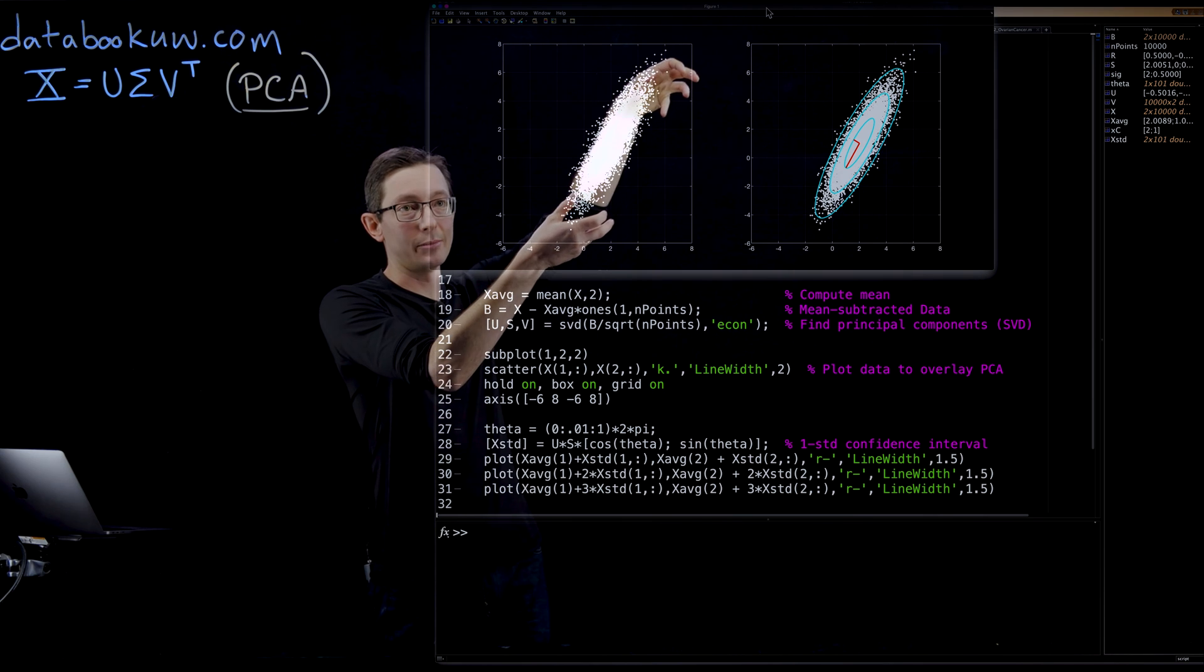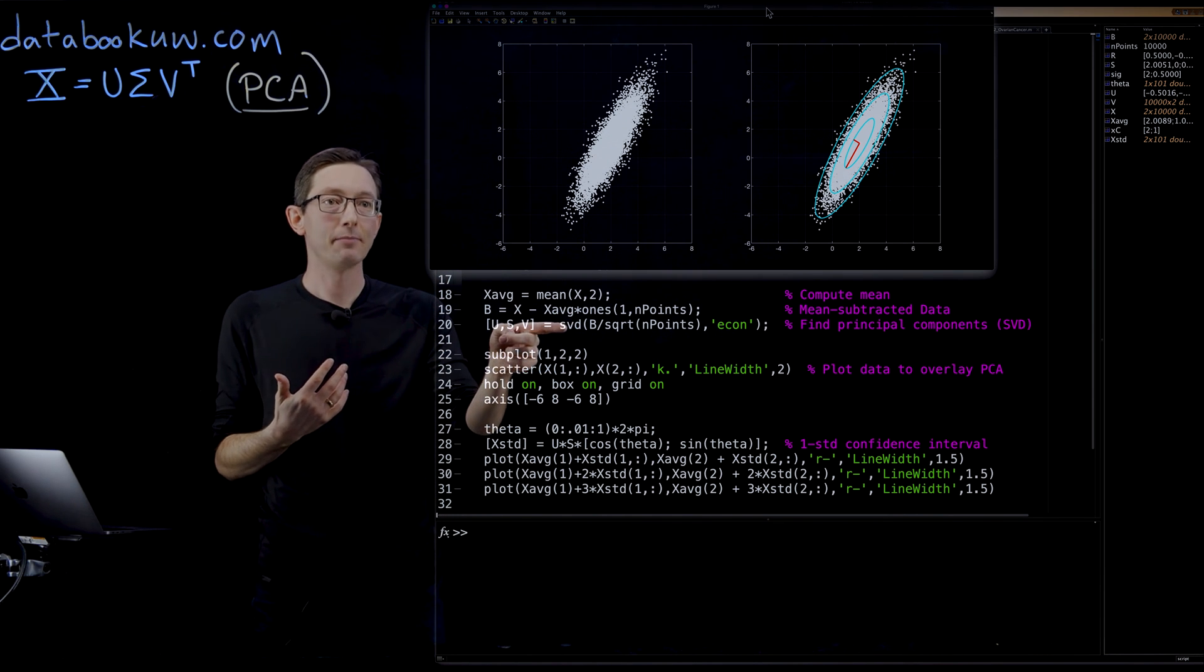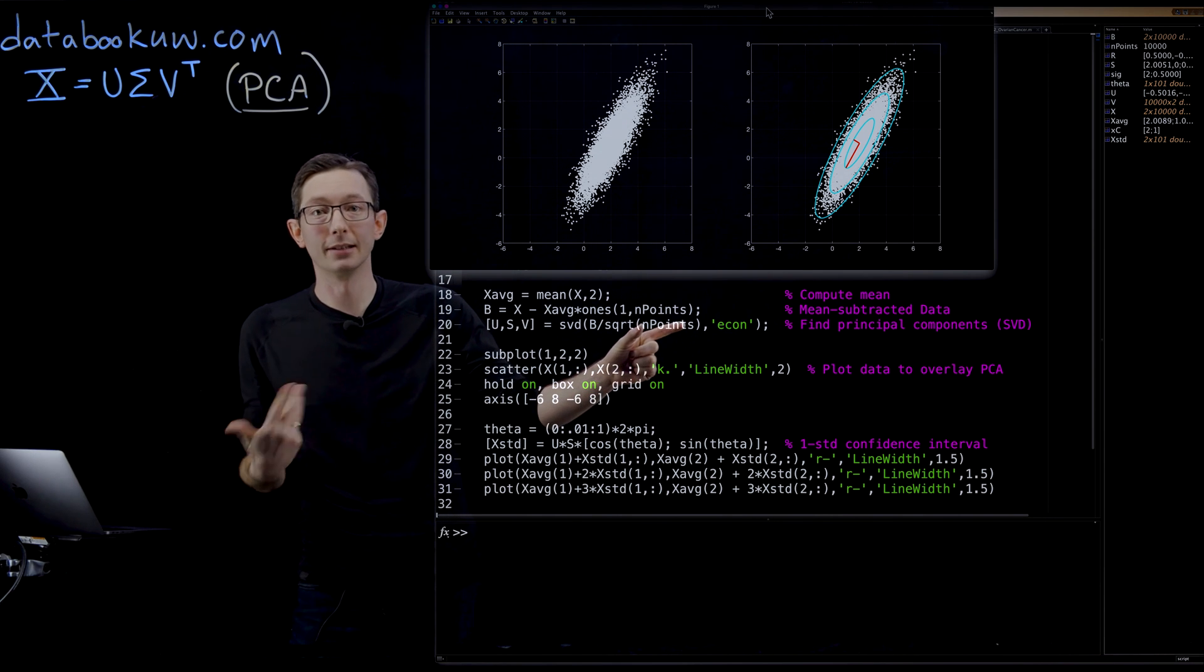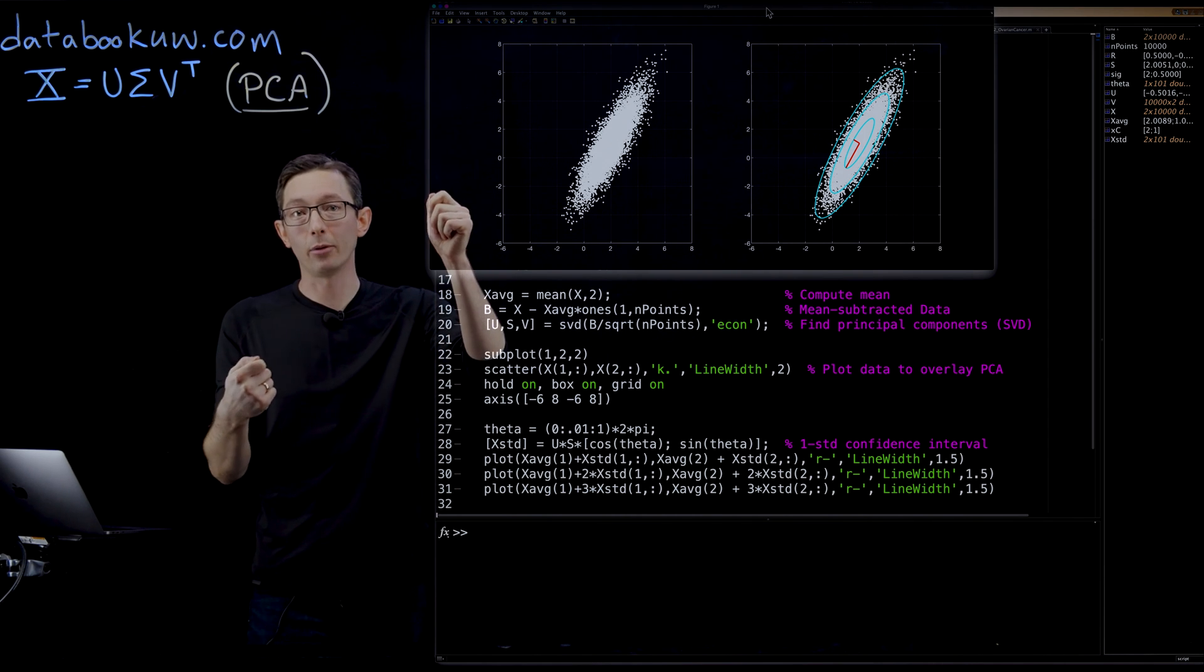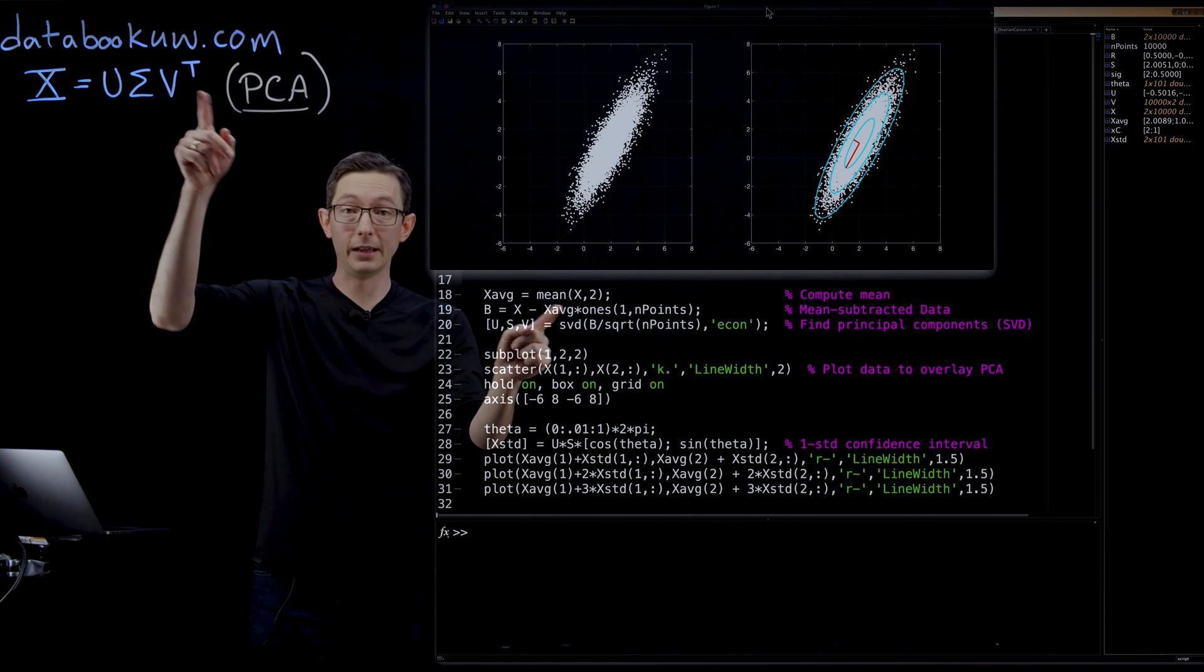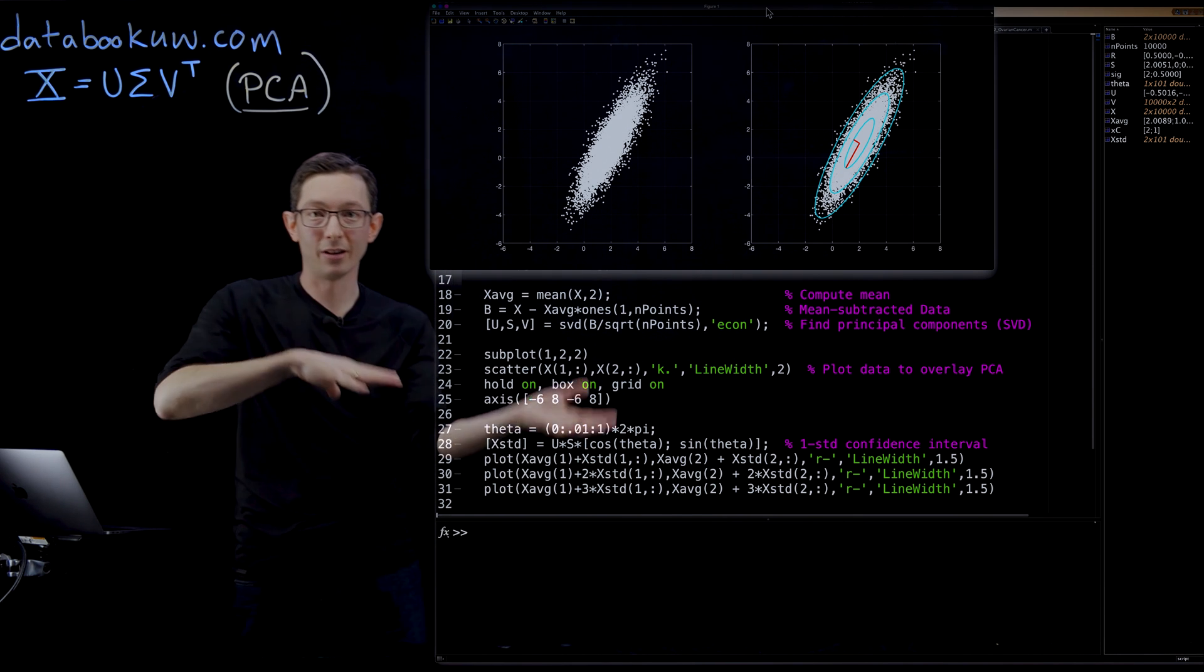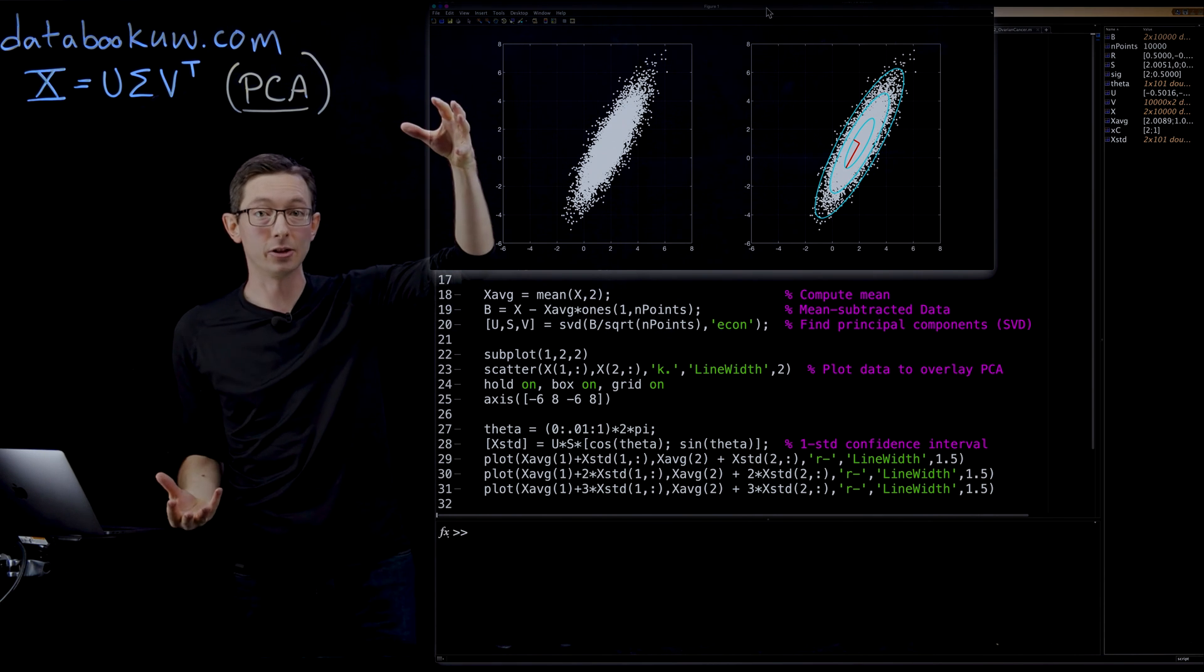The next thing we're going to do is we're going to compute the SVD of this B matrix, and we're going to normalize it by the number of data points. So essentially what we're doing is just dividing by the square root of the number of measurements. Remember, we had 10,000 measurements here. So I'm going to divide by root 10,000 or divide by 100. So that essentially I'm normalizing so that as I add more and more data points, my SVD doesn't change. So I'm going to compute this SVD, and now I have my factors U, sigma, and V from the SVD. And we're going to interpret the U columns and the sigma matrix in terms of how this data is rotated.